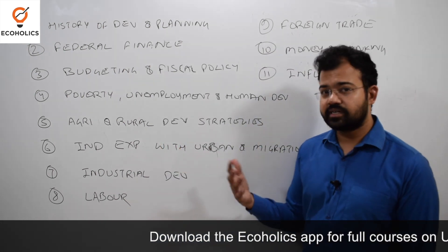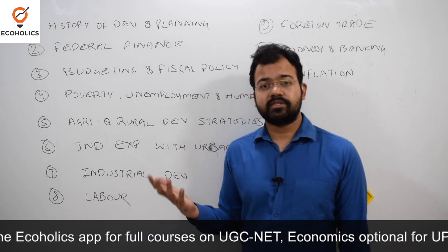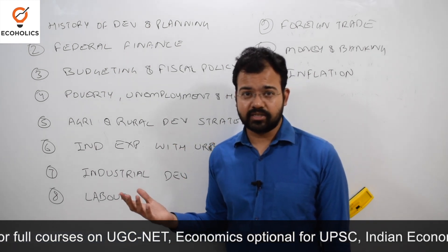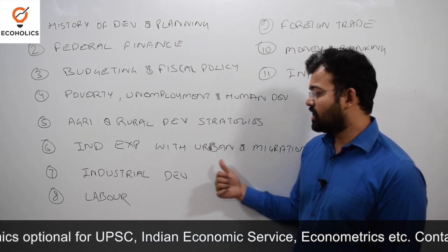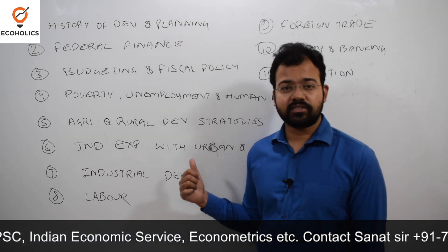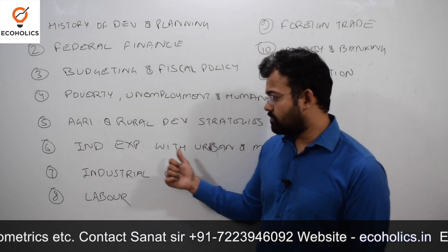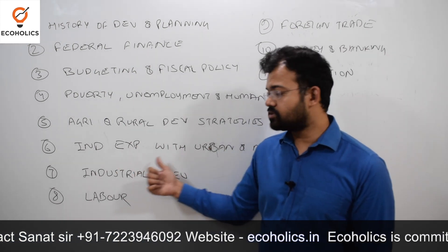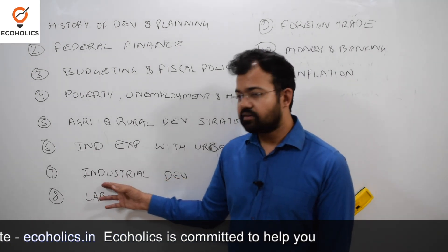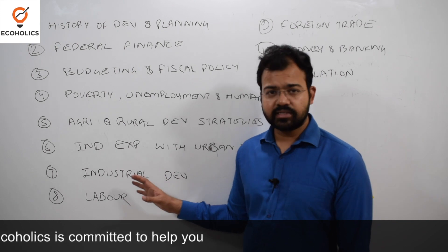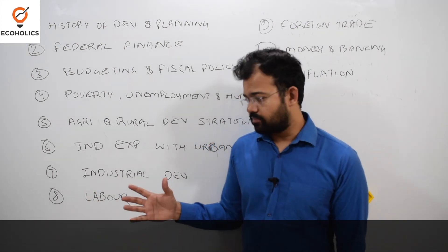For example, in Delhi, around 90% of the population is migrated. The challenge is how to cope with this huge migration and how to build urban infrastructure to handle the extra inflow of population. Another important source for urbanization and migration is newspapers and EPW magazine. For industrial development of India, a decent textbook like Mishra and Puri or Uma Kapila will suffice.